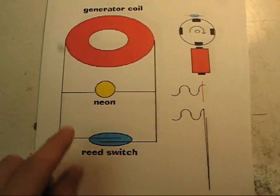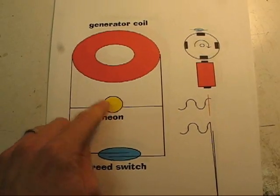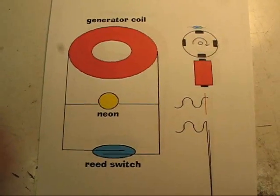Or you can simply put a neon light in here, and that will start lighting up once you do start getting the high voltage spike coming out of there.